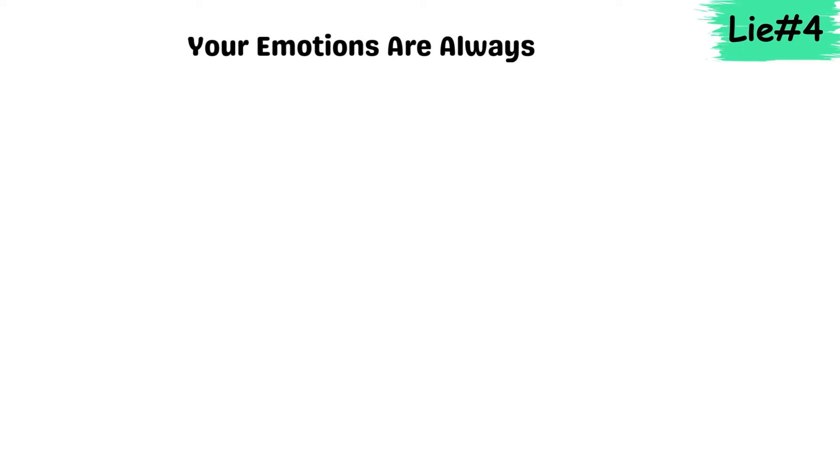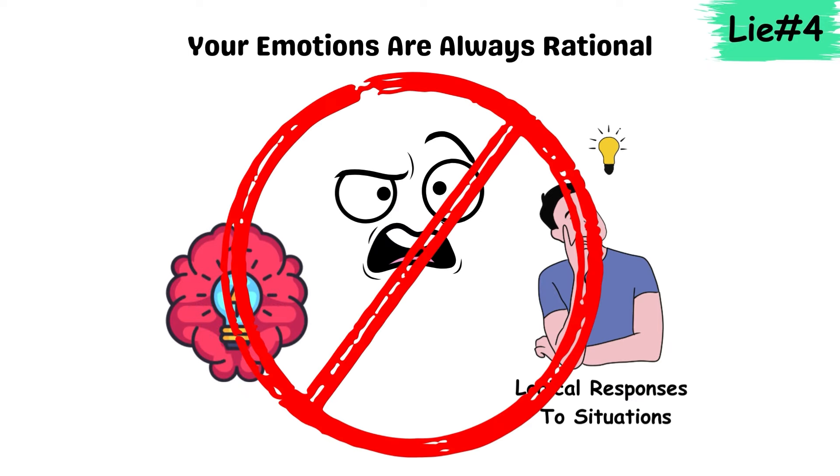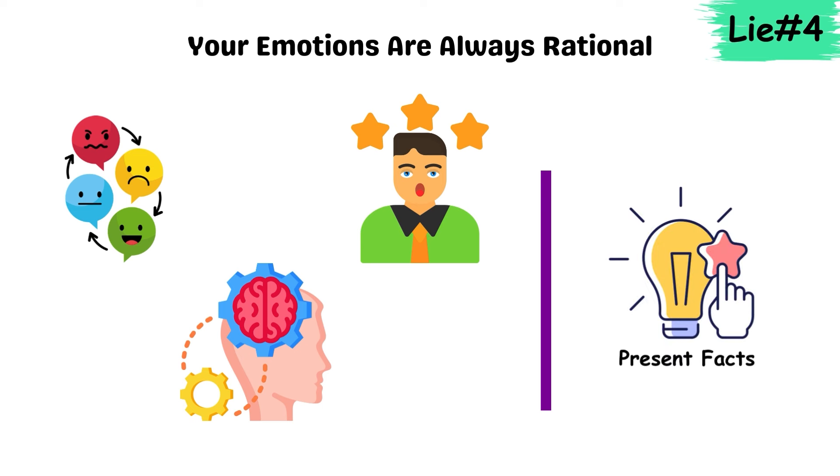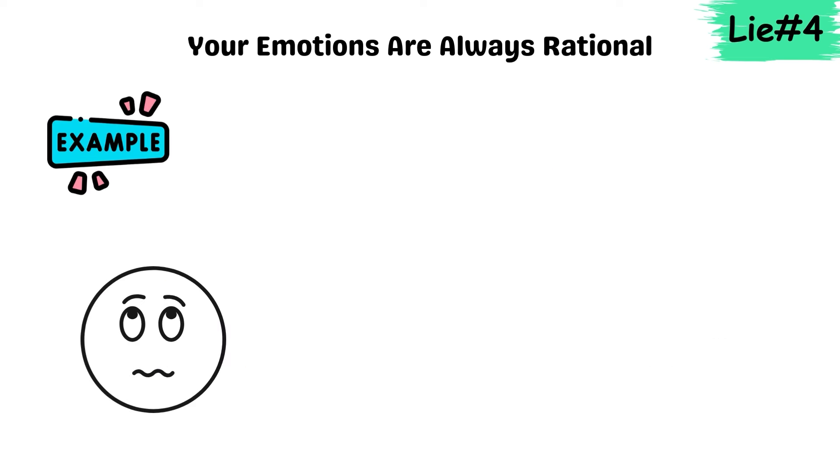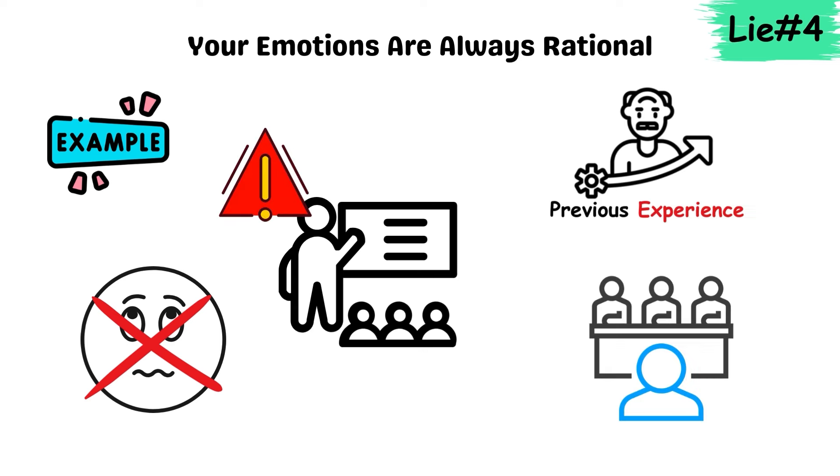Lie 4. Your emotions are always rational. Your brain wants you to believe that your emotions are logical responses to situations, but they're not always grounded in reality. Emotions are often based on your brain's interpretation of past experiences rather than present facts. For instance, feeling nervous before a presentation might have nothing to do with actual danger, but with a previous experience where you felt judged.